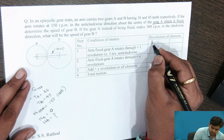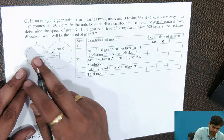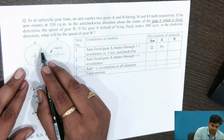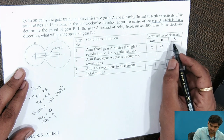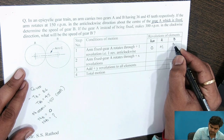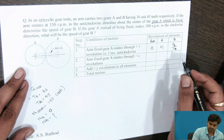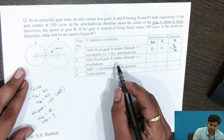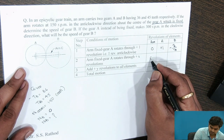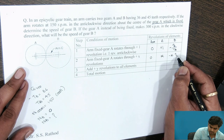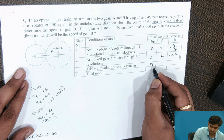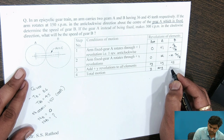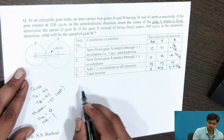We formulate the motion table: columns are arm, gear A, gear B. Arm is fixed so rotation is 0; gear A makes plus 1 rotation; speed of B is minus TA by TB, since the gears mesh externally and we change the sign convention. For the X rotation case: arm is 0, gear A is X, gear B is minus X into TA by TB. Adding Y revolution to all elements: arm = Y, gear A = X plus Y, gear B = Y minus X into TA by TB. This is the total motion.